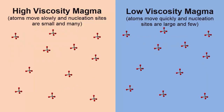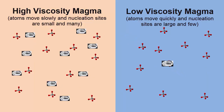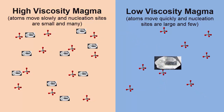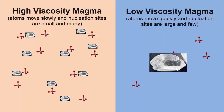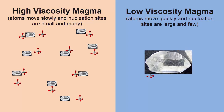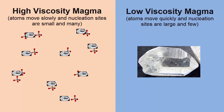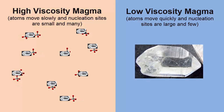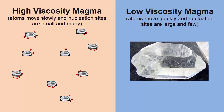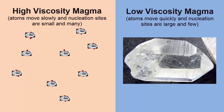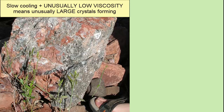Magmas that stay underground and have unusually low viscosities will do the opposite. The ions can migrate rapidly through the low viscosity magma to nucleation sites, and instead of many small minerals forming, we see fewer crystals but each much larger.